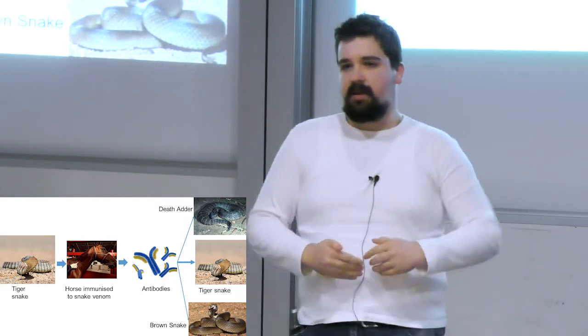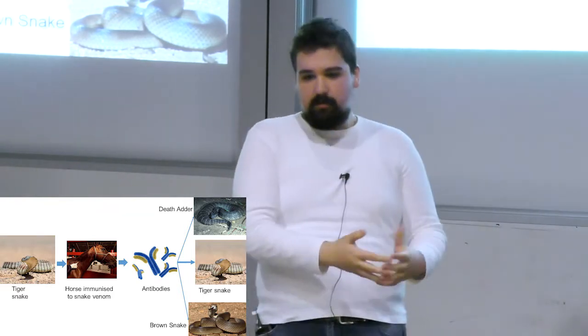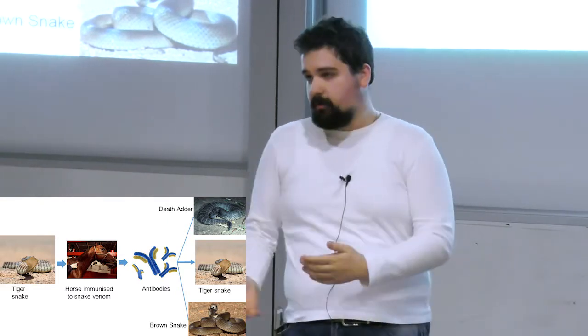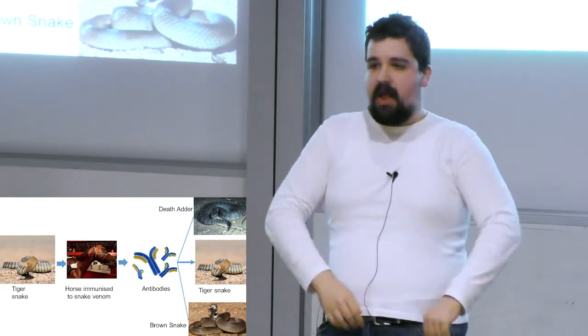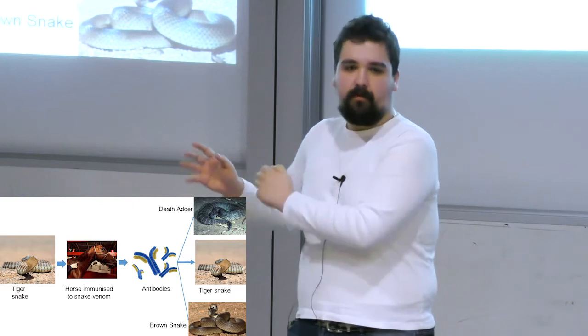Antivenom itself is generated much the same way as a vaccine. You take your venom from a snake, such as a tiger snake, you administer it into an animal, such as a horse, you then collect out the antibodies from the animal, and that is administered to people to treat them for snake bite.